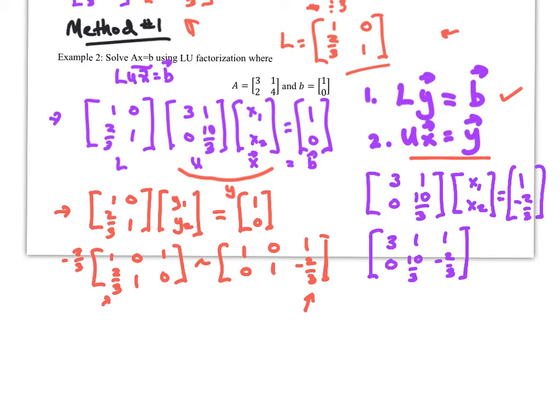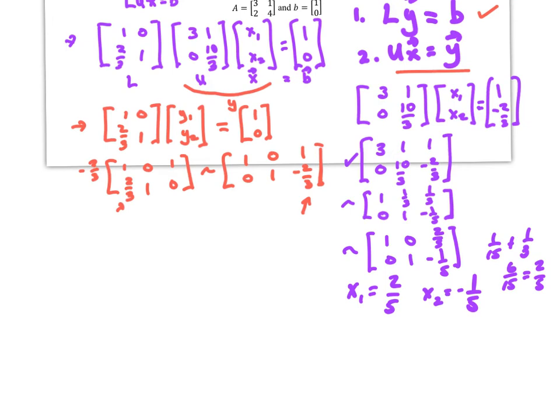Now solve UX = Y with a similar augmented matrix setup and row reduction. I ended up with x1 = 2/5 and x2 = -1/5. I verified this by putting it into my calculator to do row reduced echelon form on the original augmented matrix — same result.